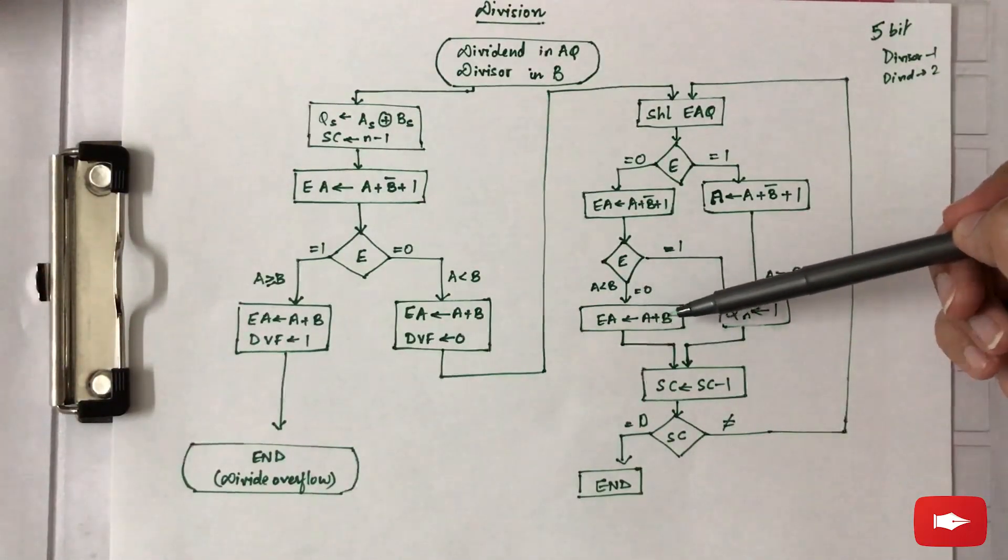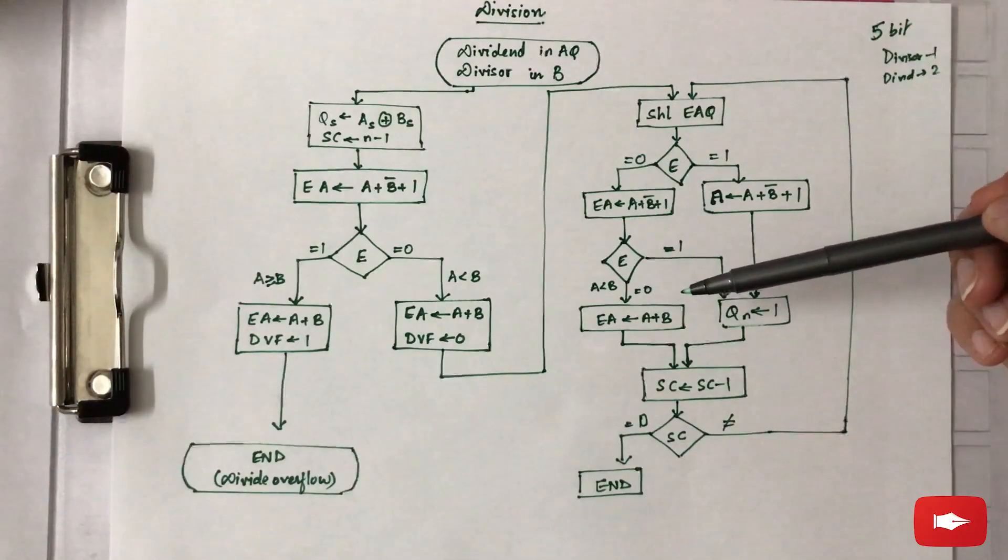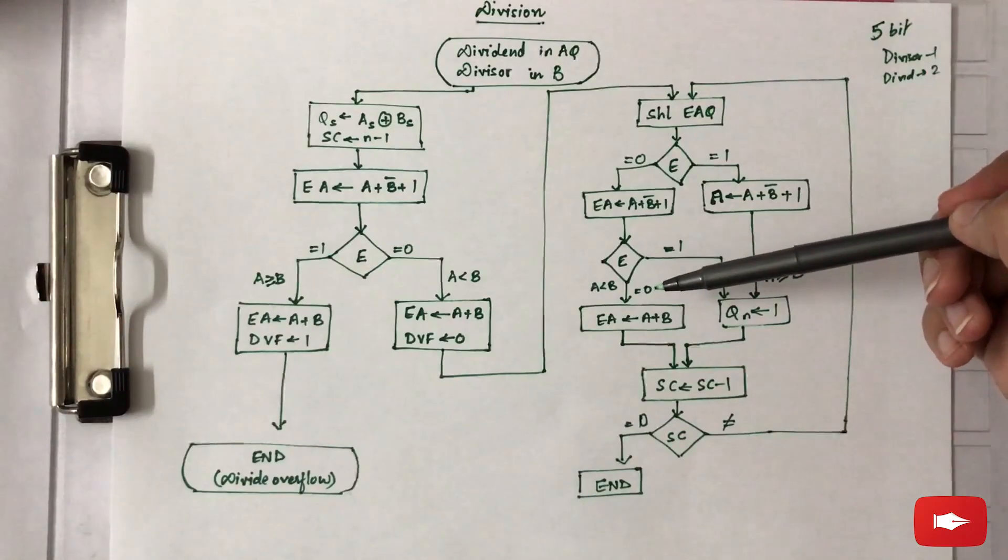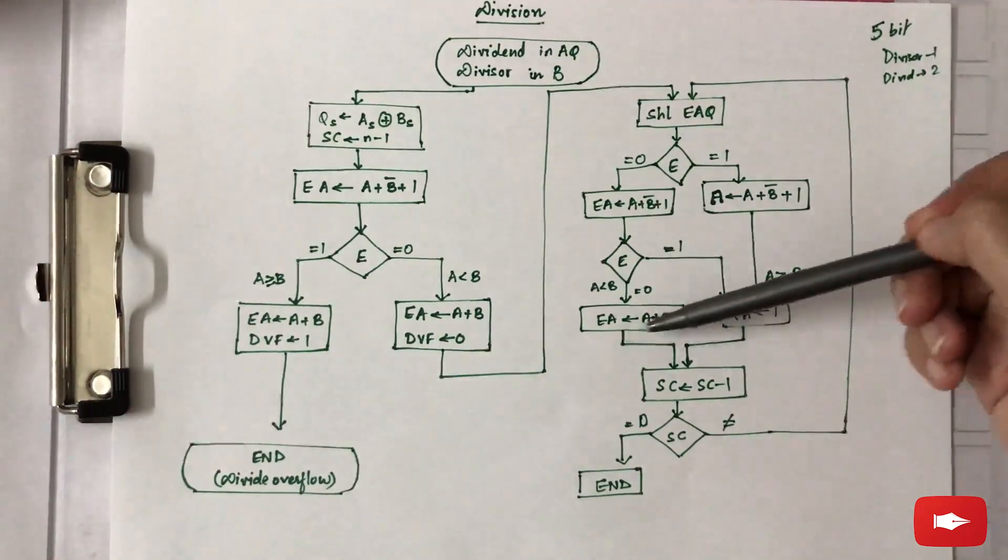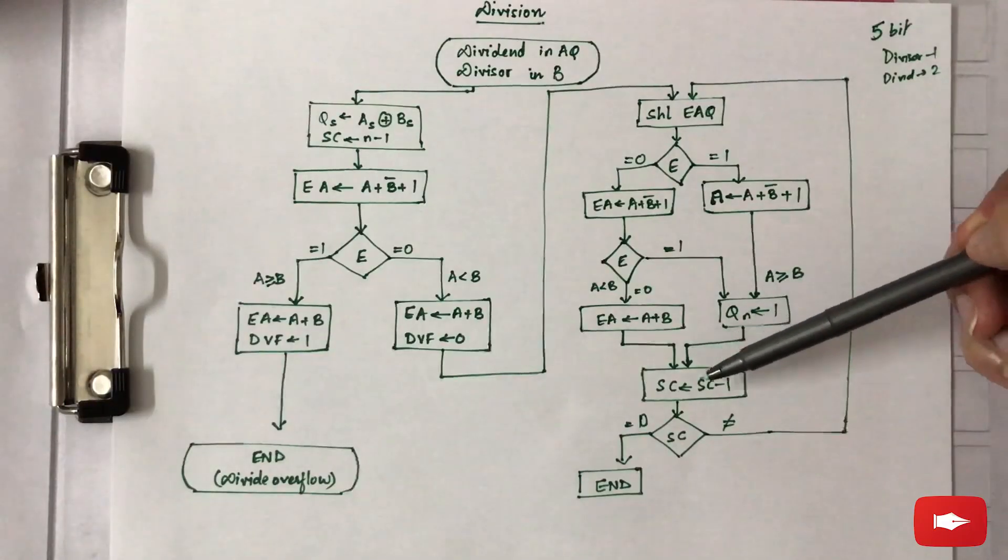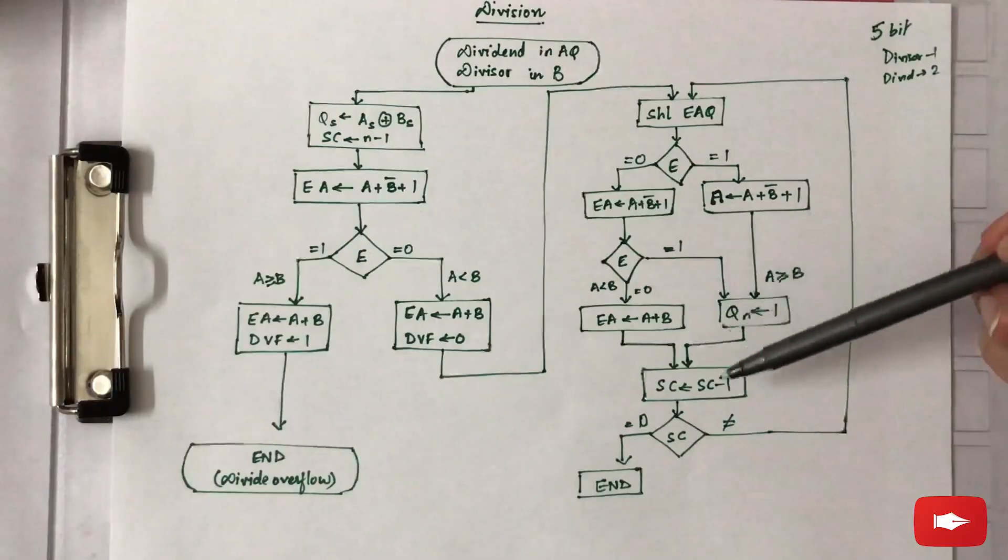If it is one, Qn's value is set to one, whereas if it is zero, the value of B is added to A to reset the value of A which was changed after a subtraction. After these two steps, the sequence counter is decremented by one.